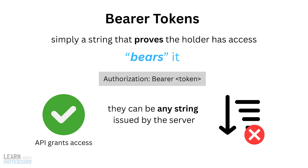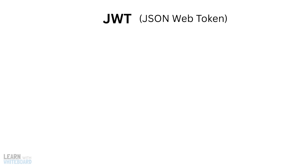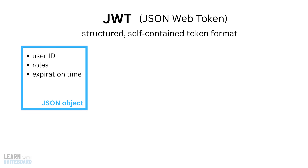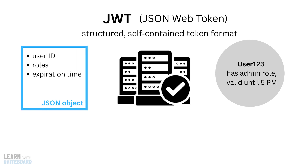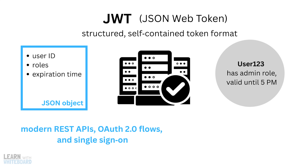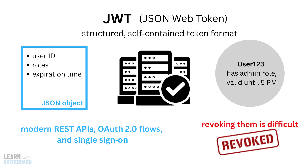One very common implementation of bearer tokens is the JWT, or JSON Web Token. A JWT is a structured, self-contained token format. It encodes claims such as user ID, roles, and an expiration time inside a JSON object. Because it's digitally signed, the server can verify the contents without a database lookup. For example, a JWT might say: user123 has admin role, valid until 5pm. This makes JWT very popular for modern REST APIs, OAuth2 flows, and single sign-on apps. The drawback is that once issued, revoking them is difficult — that's why you usually rely on short lifetimes and refresh strategies.